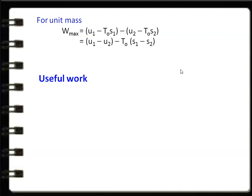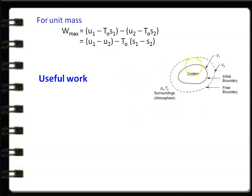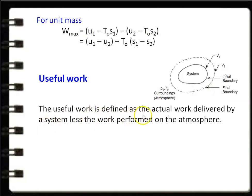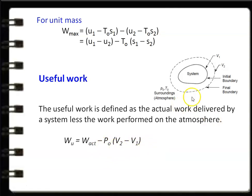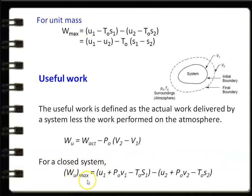There is also the concept of useful work. The maximum work includes work done on the surroundings to move the boundary, which must be subtracted. Useful work is defined as the actual work delivered by the system less the work performed on the atmosphere: W_useful = W_actual − P0·(V2 − V1), where P0 is the surrounding pressure, V2 is the final volume, and V1 is the initial volume. For a closed system, W_u_maximum = (U1 + P0·V1 − T0·S1) − (U2 + P0·V2 − T0·S2).